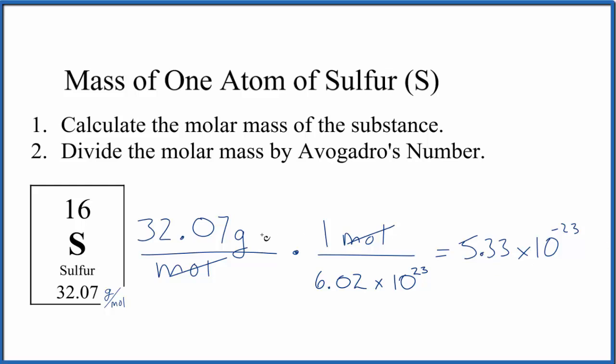If you wanted this number in kilograms—you wanted to find the mass of one atom of sulfur in kilograms—you would divide this by a thousand, so you get an even smaller number: 5.33 times 10 to the minus 26.